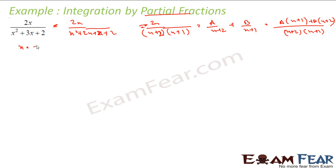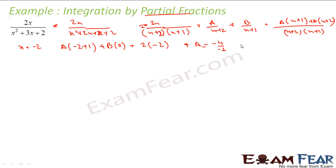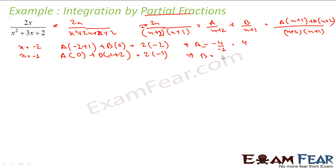Putting x = −2: A(−2 + 1) + B(−2 + 2) = 2(−2), so A(−1) = −4, giving A = 4. Putting x = −1: A(0) + B(−1 + 2) = 2(−1), so B(1) = −2, giving B = −2.